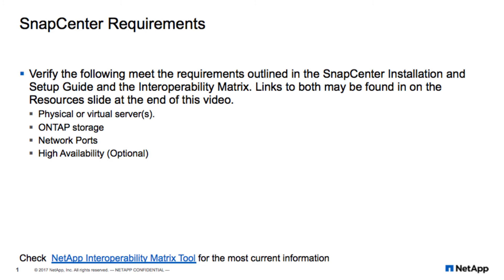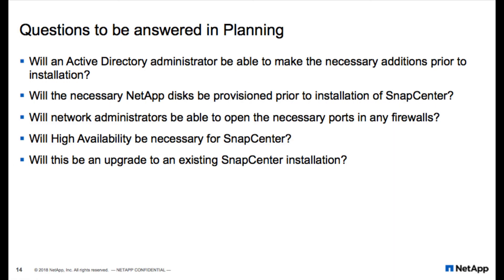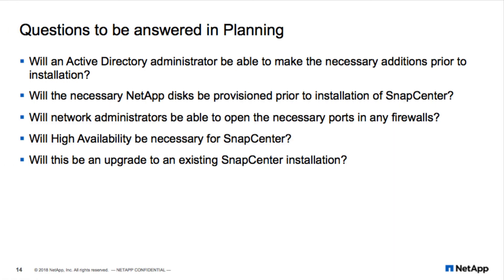The requirements for SnapCenter are thoroughly covered in the SnapCenter installation and setup guide. The server can be either a physical or a virtual machine. Pay particular attention to the memory, disk space, and network port requirements. It will also pay to make sure the necessary software packages are installed, since the SnapCenter installer will perform a prerequisite check at the beginning of the installation. You may also need to consult the NetApp interoperability matrix on the NetApp support site. By the end of the planning process, make sure that these questions can be adequately answered.